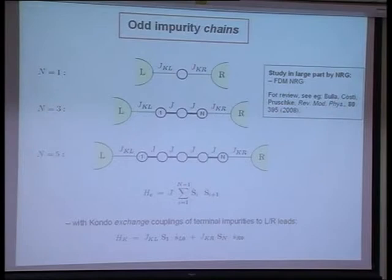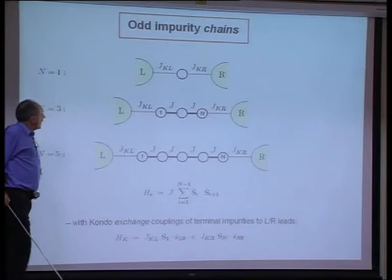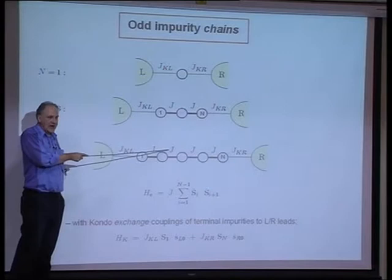In order to understand this problem, it's not just good enough to study the stable fixed point — you need to study a range of fixed points, and the flows between them are important in understanding this problem. The method of choice really has to be Wilson's NRG, which I shall use.